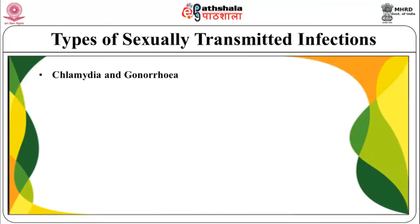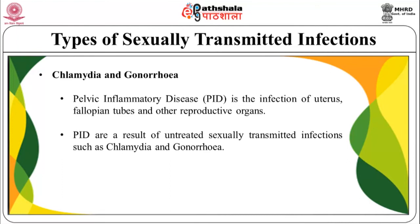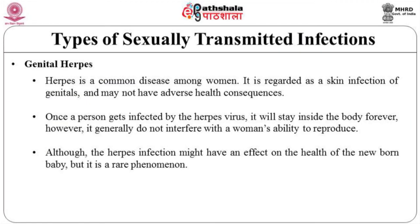Types of sexually transmitted infections: chlamydia and gonorrhea. Pelvic inflammatory disease (PID) is the infection of the uterus, fallopian tubes and other reproductive organs, and is a result of untreated sexually transmitted infections such as chlamydia and gonorrhea. PID can have serious consequences affecting the fertility of women and may lead to complications during pregnancy and childbirth. Genital herpes is a common disease among women, regarded as a skin infection of the genitals which may not have adverse health consequences. Once a person gets infected by herpes, it will stay inside the body forever; however, it generally does not interfere with the woman's ability to reproduce, although the herpes infection might rarely affect the health of the newborn baby.